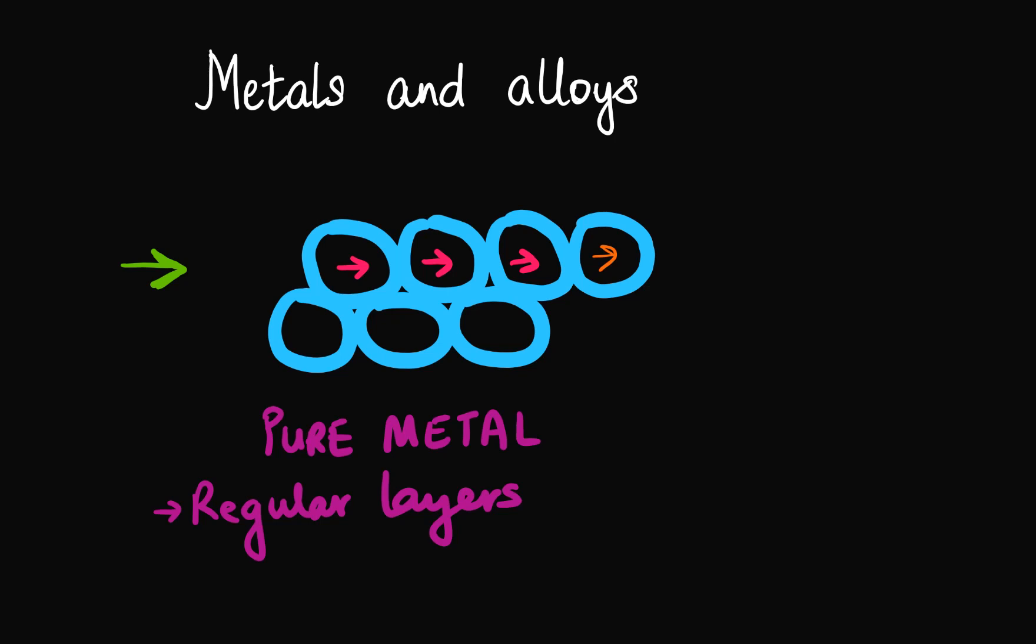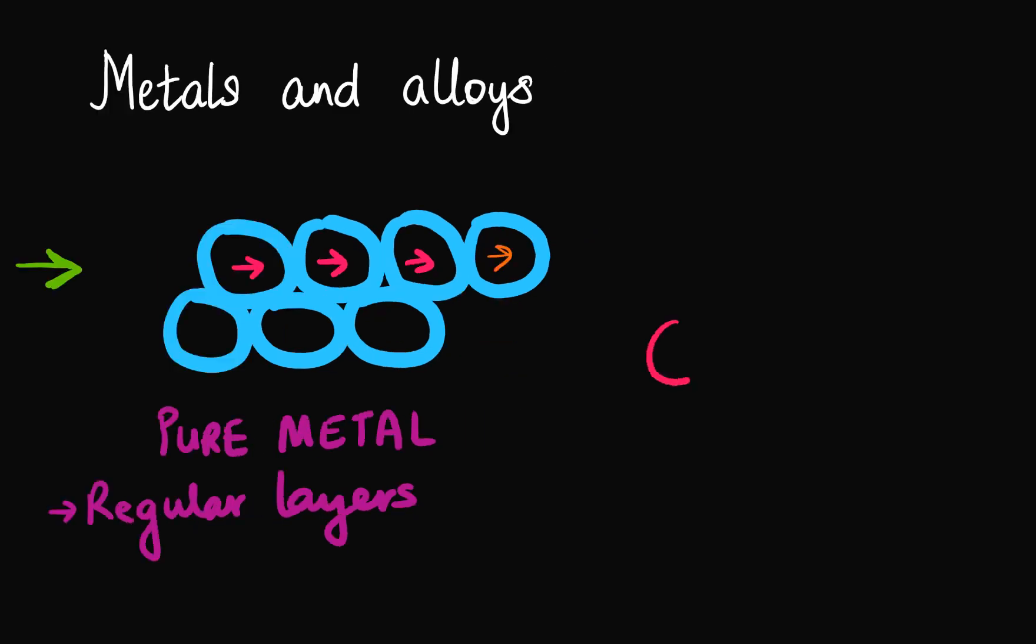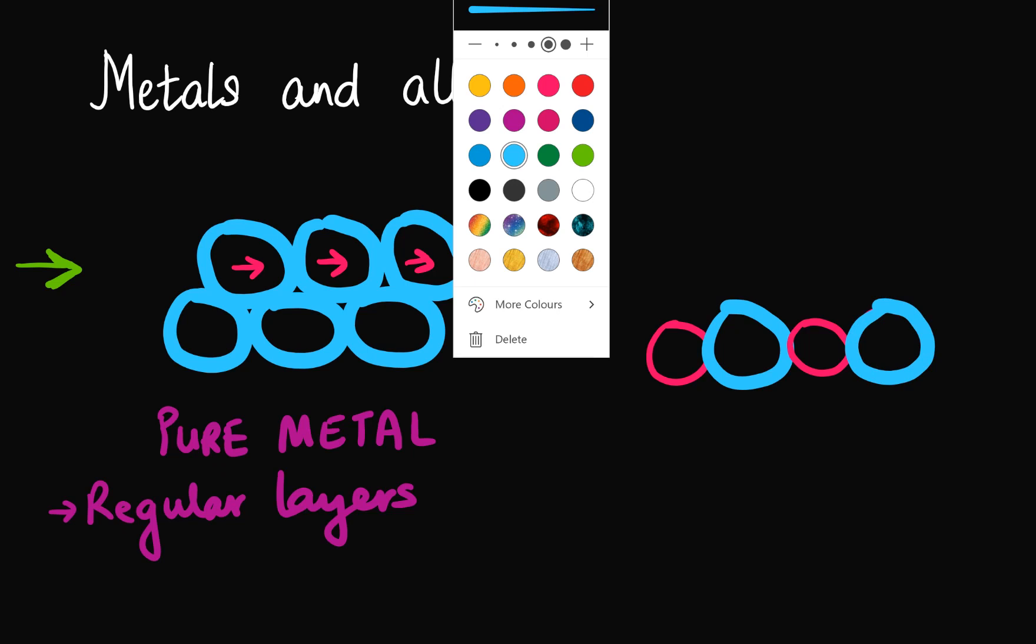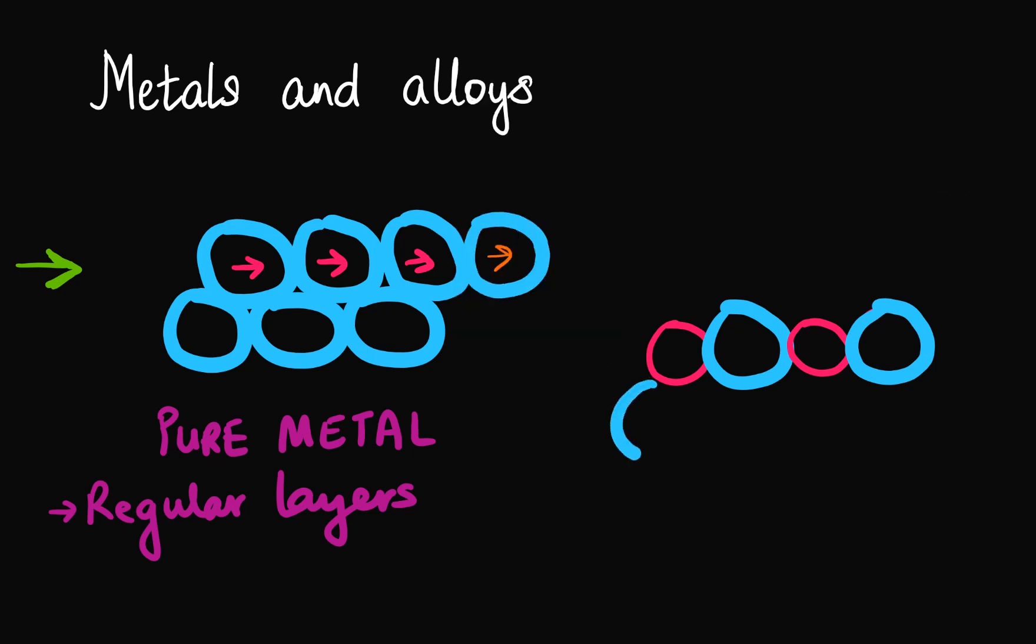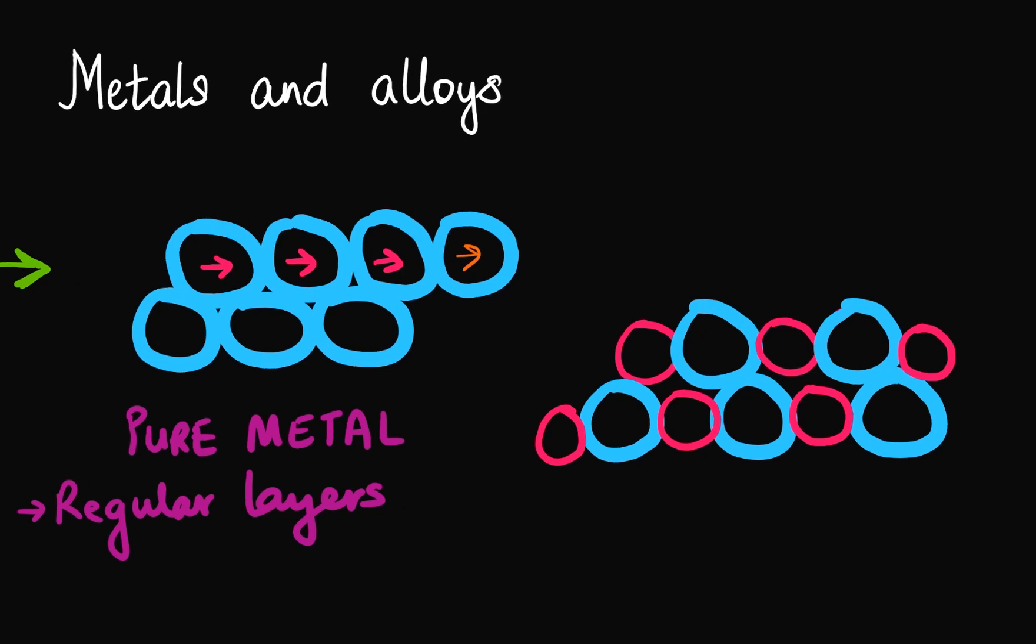But now when you talk about an alloy, you know an alloy is a mixture of two different metals. So let one color represent the atom of one metal and the other represent the atom of the other metal. So in that case what's going to happen is I'm going to now number them. So before I number them let me just finish drawing the structure of the alloy.